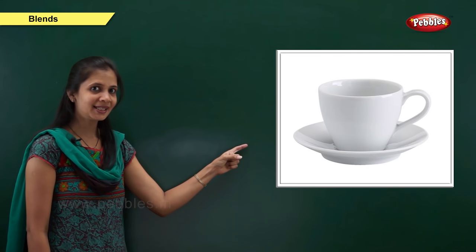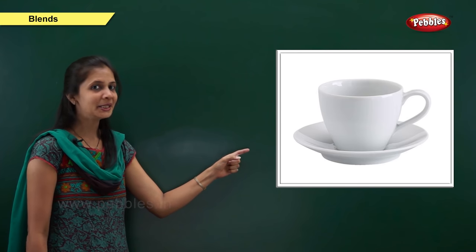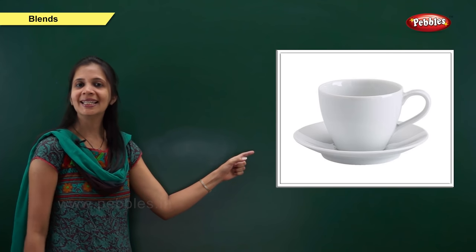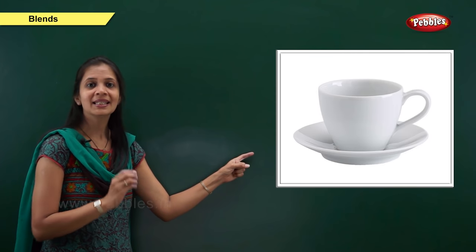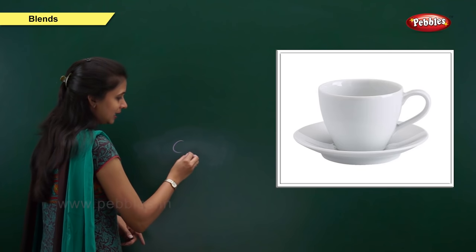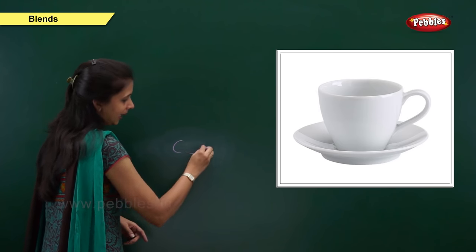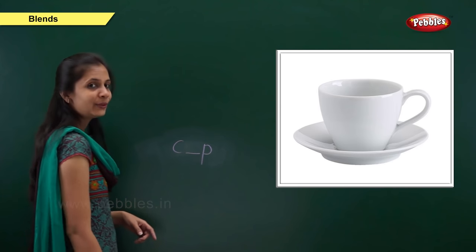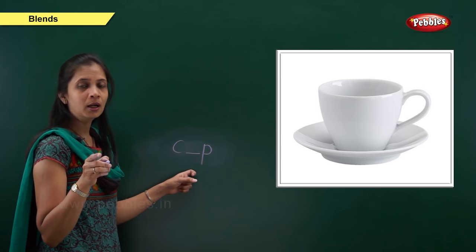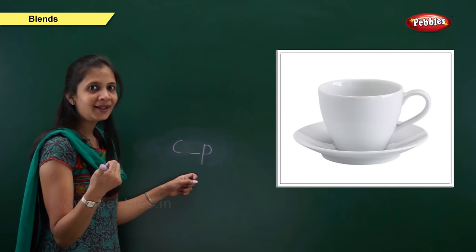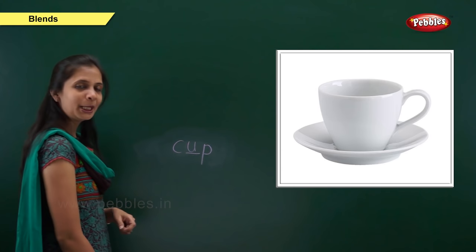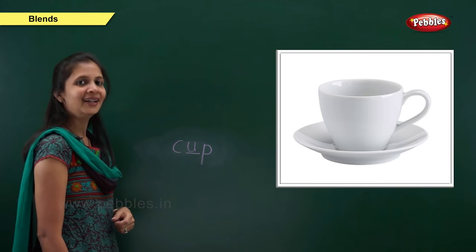Next one. Now, what is it? Yes, it is the picture of cup. What is the sound of it? It is ka, a, pa — cup. When 'k' is here, the letter is c. When 'p' is here, the letter is p. What about the middle sound? The vowel is u. C, u, p — cup.